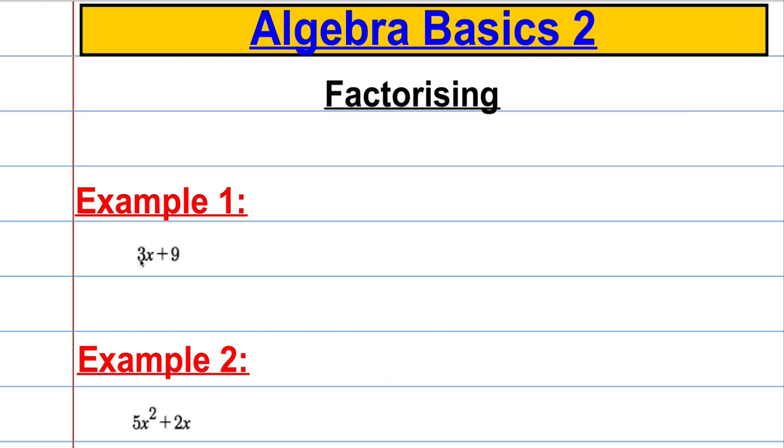We've got something like 3x plus 9 and I want to factorise that. I've got to take out what's common to both, I can factor out a 3 and that leaves me with x plus 3.